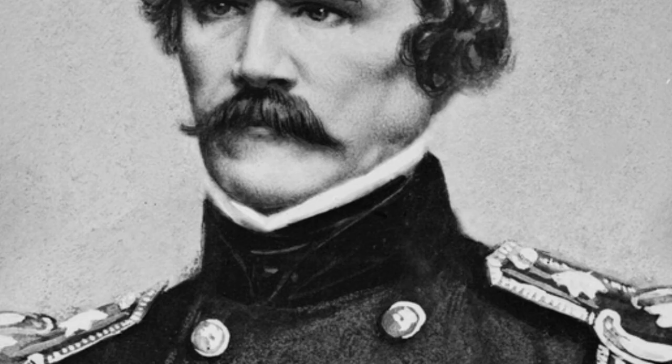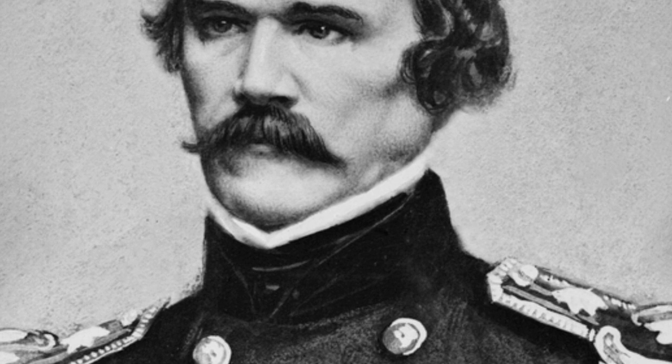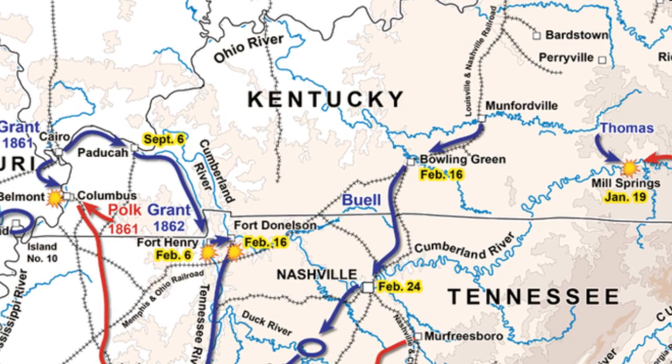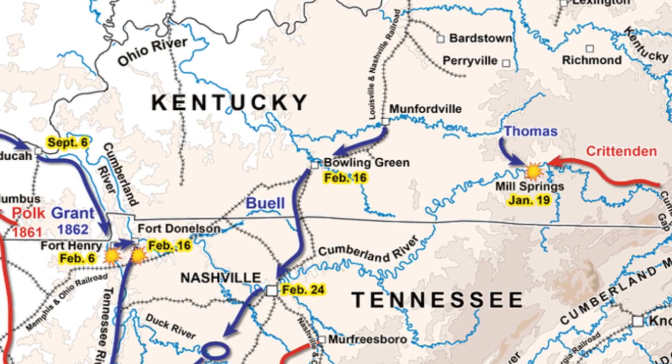Since the fall of 1861, Confederate General Albert Sidney Johnston commanded the entire Western Theater of Operations of the Confederacy and placed forces at three main locations in Kentucky to protect Tennessee from invasion. Leonidas Polk controlled Columbus, Kentucky, Johnston himself at Bowling Green, and Felix Zollicoffer at Cumberland Gap.